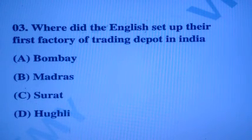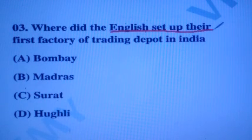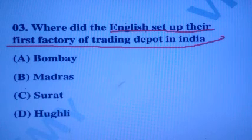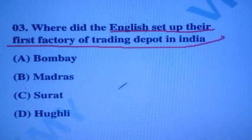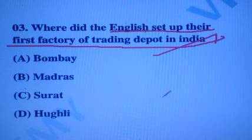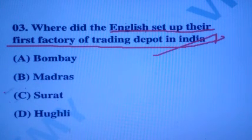Where did the English set up their first factory for trading in India? The answer is Option C.